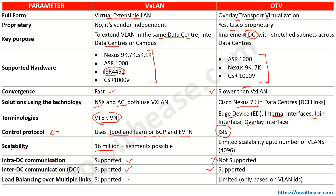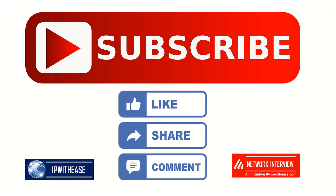Finally, regarding load balancing over multiple links between data centers: VXLAN fully supports this, while OTV has limitations and can only perform load balancing based on VLAN. That takes us to the end of the video. Hope it was informative — please like and subscribe. Thank you.